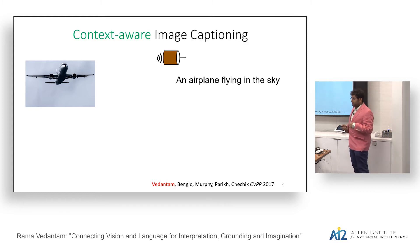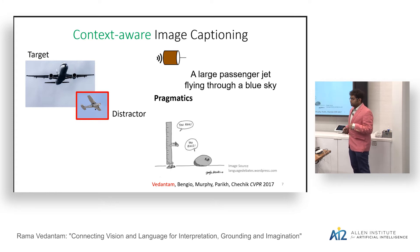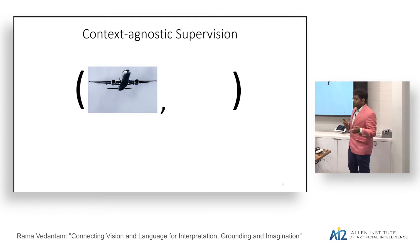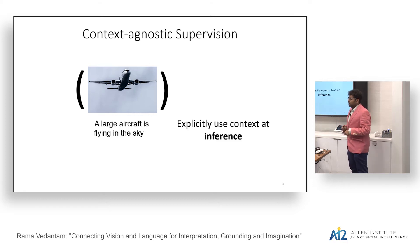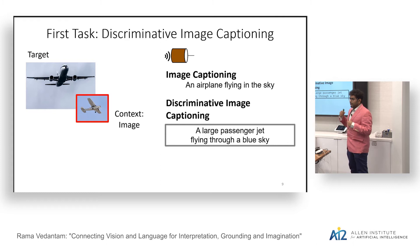Image captioning is the problem where you have an input image and want to generate a sentence such as 'an airplane flying in the sky.' The context-aware image captioning problem is when you are given a target and a distractor image, and you'd like to say something like 'a large passenger jet flying through the blue sky,' which is discriminative of the target image relative to the distractor. This is related to pragmatics, which studies how context affects the meaning of words.